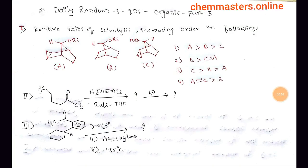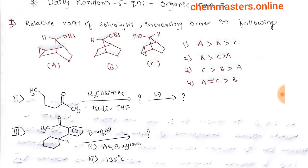Hi, now daily random five questions, organic part three. The first question is relative rates of salvolysis in increasing order in the following molecules. We have A, B, C, and we have four options.